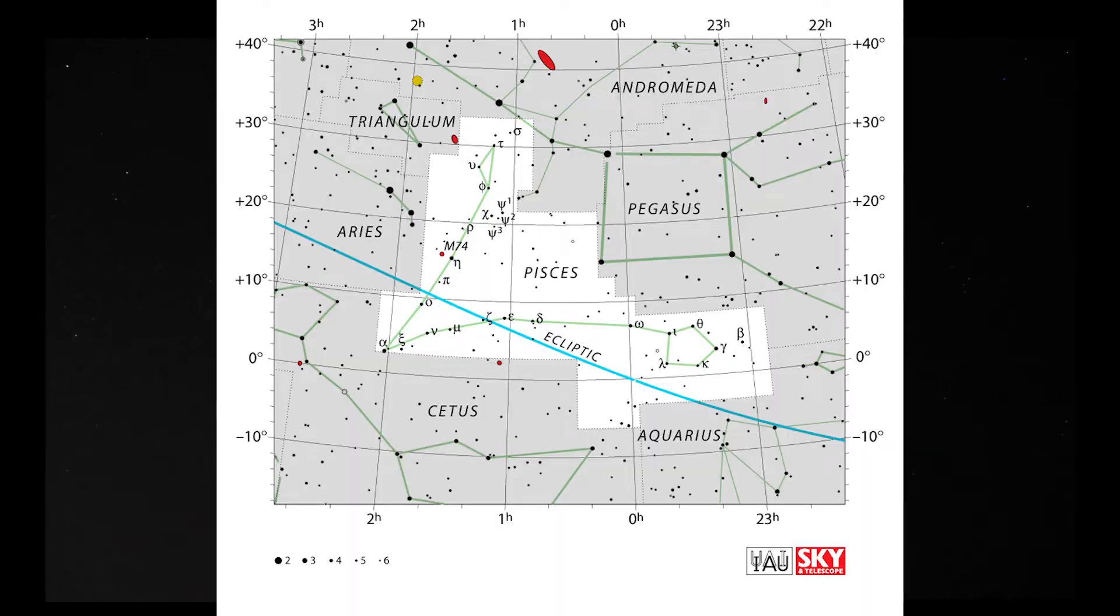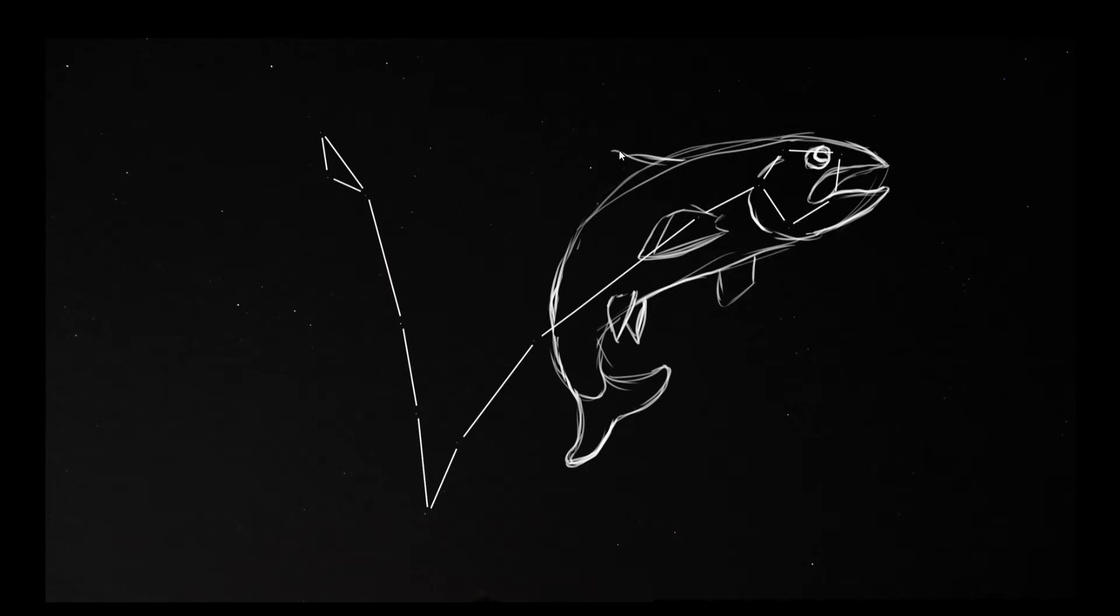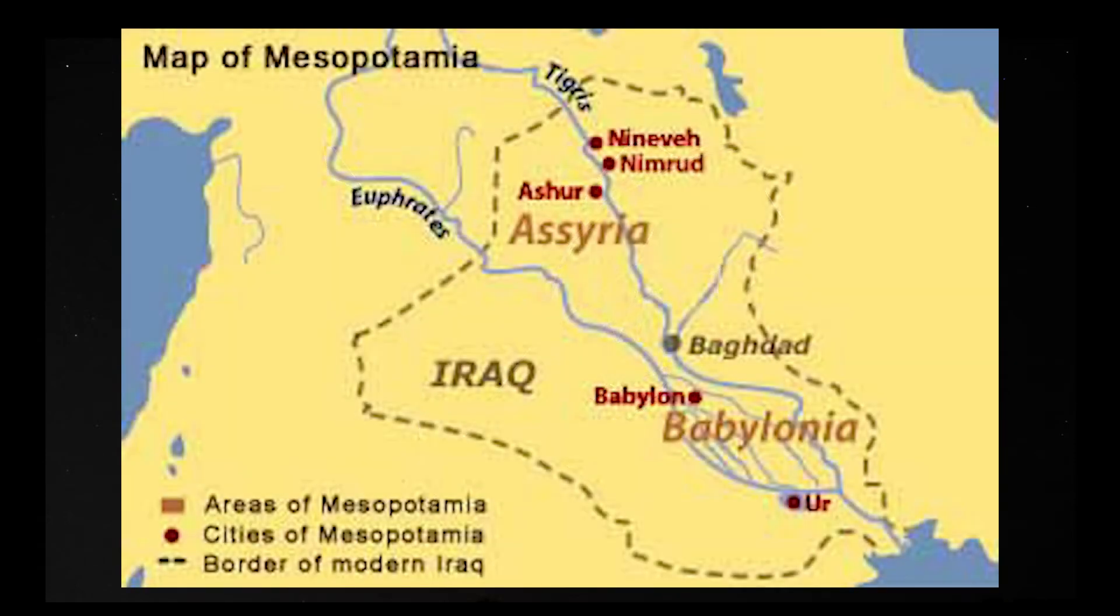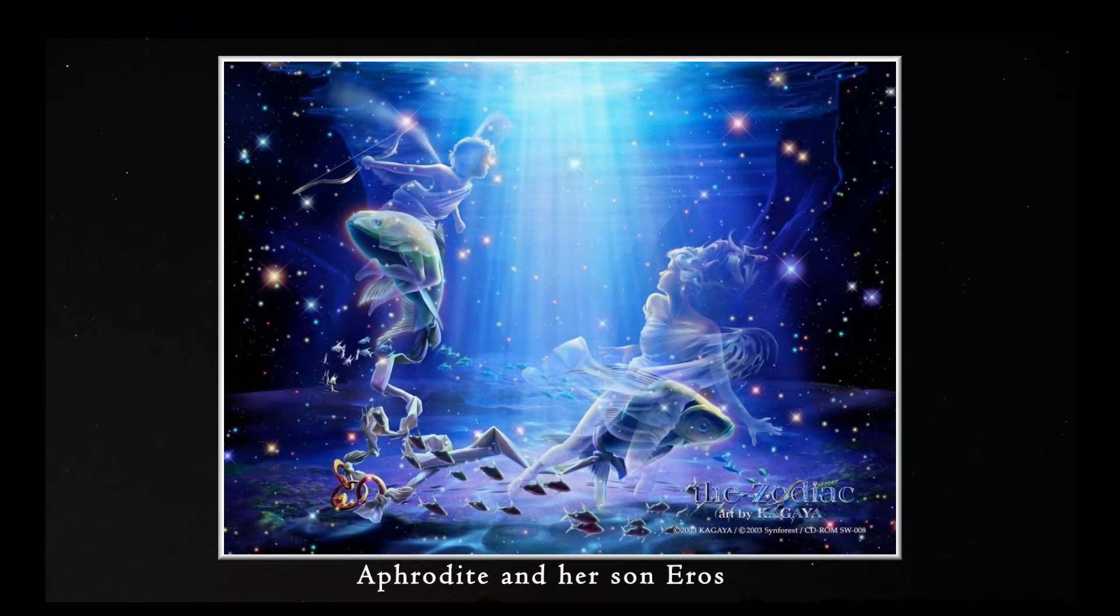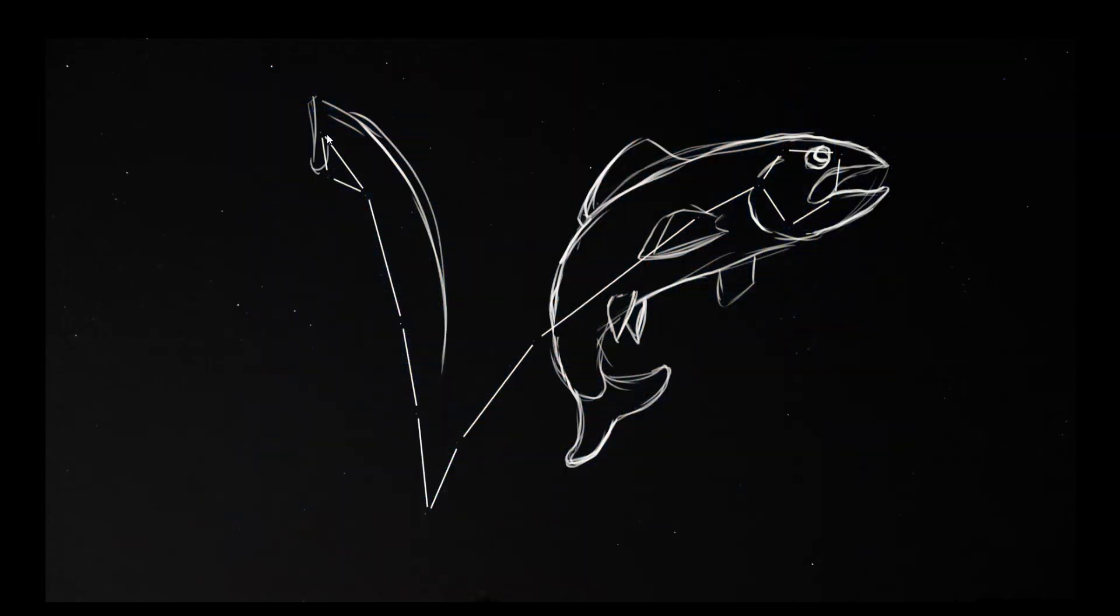Pisces is Latin plural for fish. The ancient Babylonian mythology around this constellation is not clear. While one possible name for it was the Tale of the Swallow, it's also thought that it may have represented the Tigris and Euphrates Rivers. According to Greek legend, this constellation may have been represented by Aphrodite and her son Eros escaping the monster Typhon by jumping into the river. One story says they turned into two fish to swim away, and another says they were rescued by two fish who were tied together at the tail.